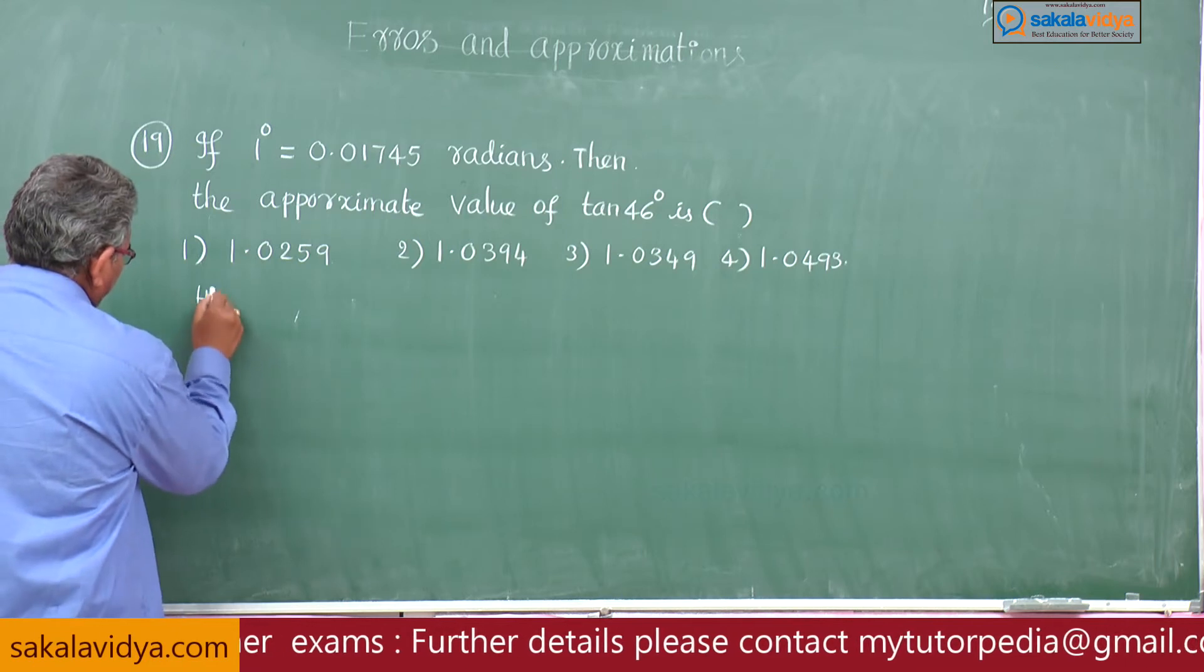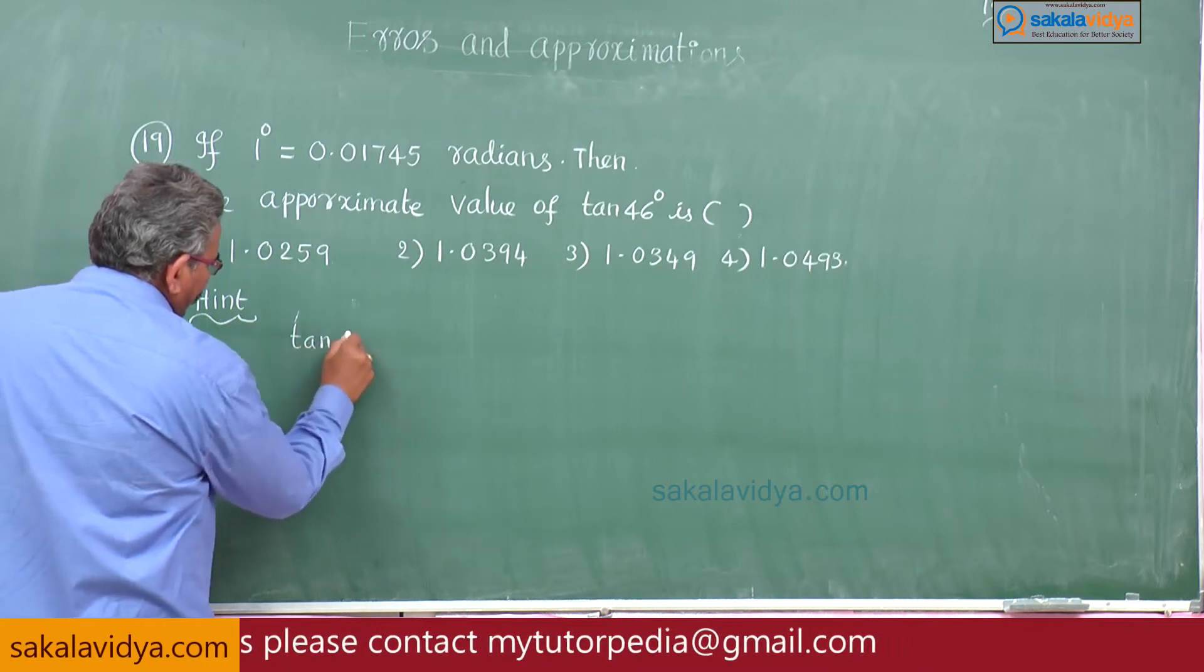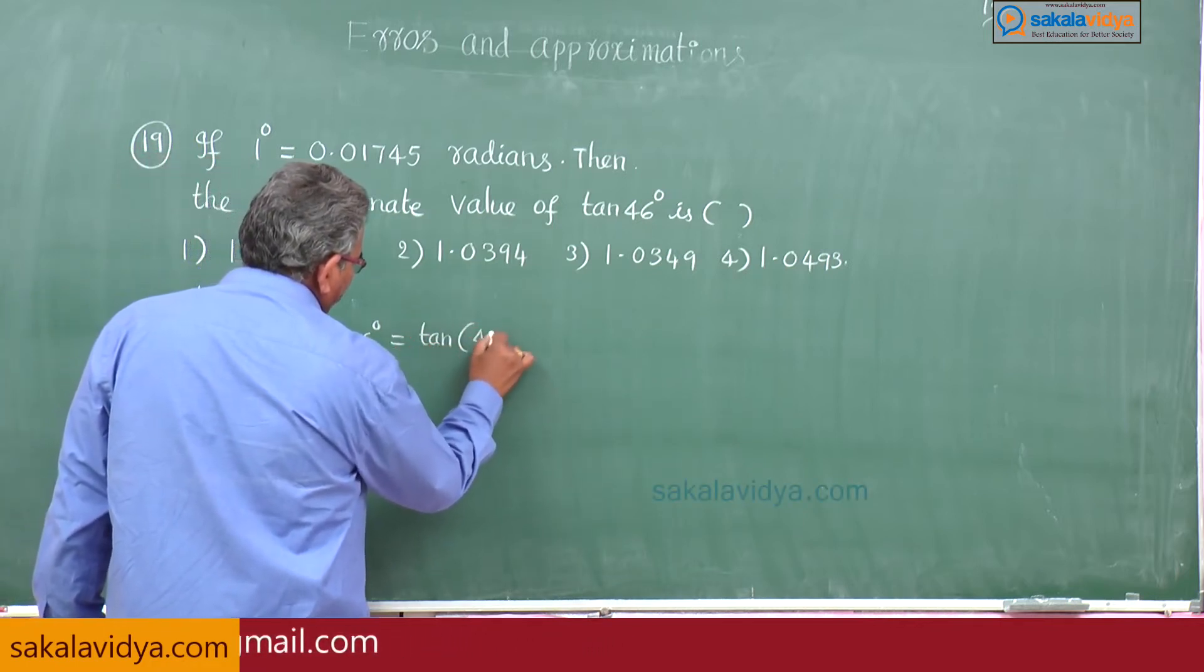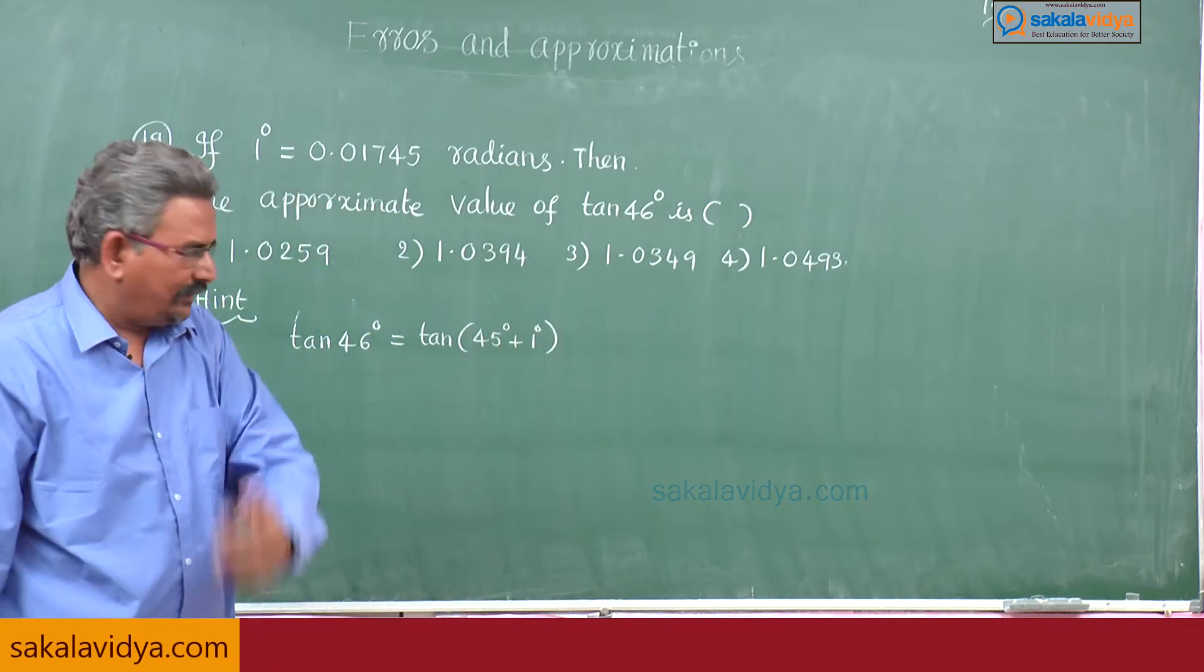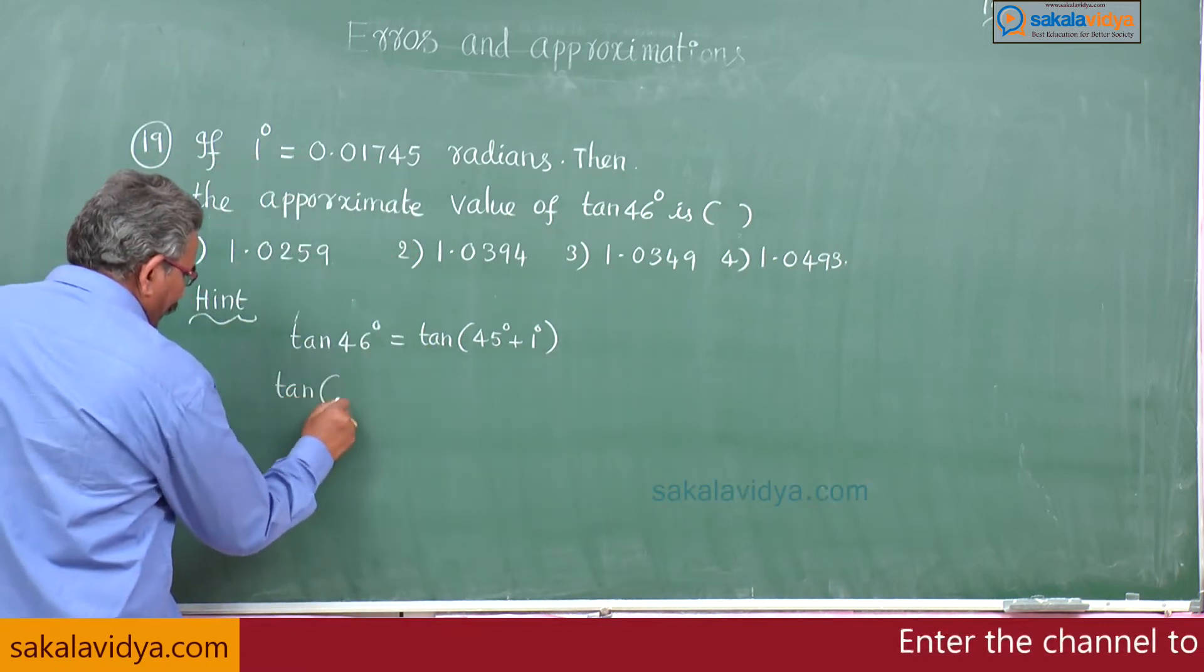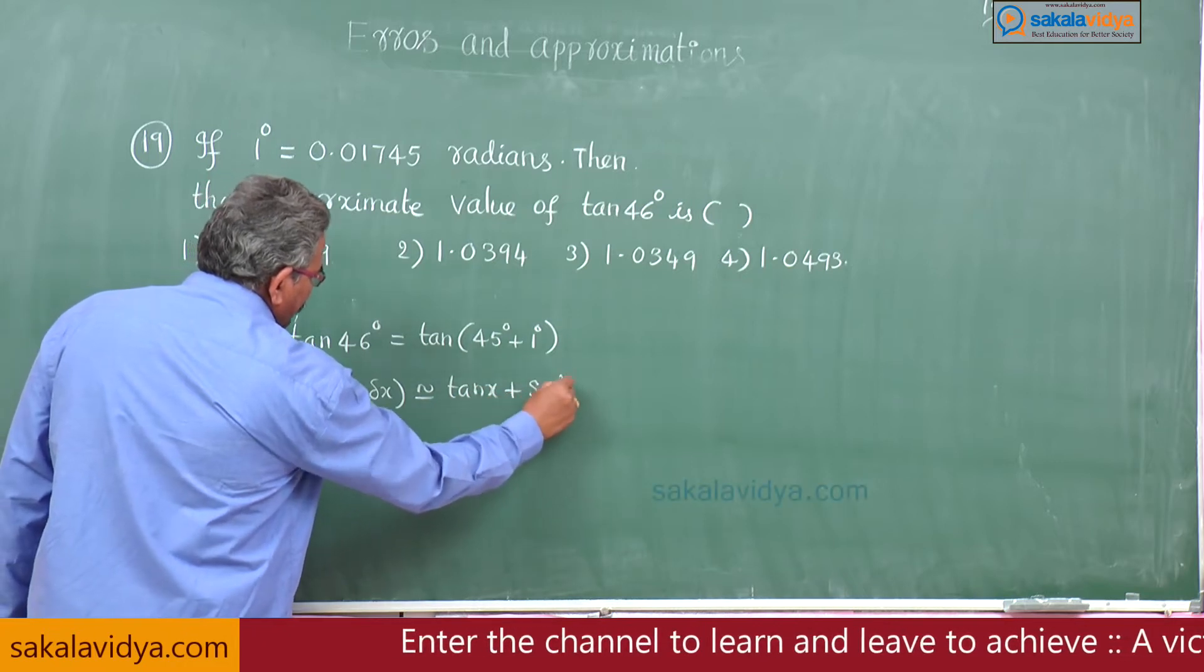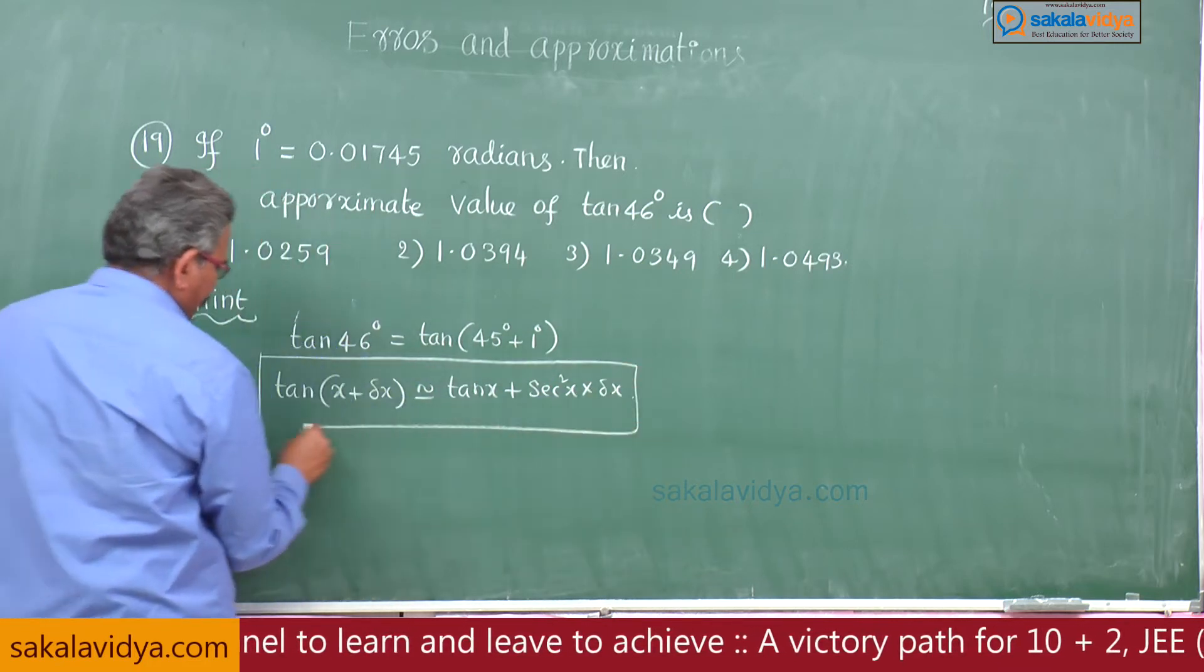Here's the hint: we are asked to find out tan 46 degrees, which we can write as tan 45 degrees plus 1 degree, because tan 45 degrees simply equals 1. Now here we have one formula: tan of x plus delta x approximately equal to tan x plus secant square x into delta x, just 1 degree.